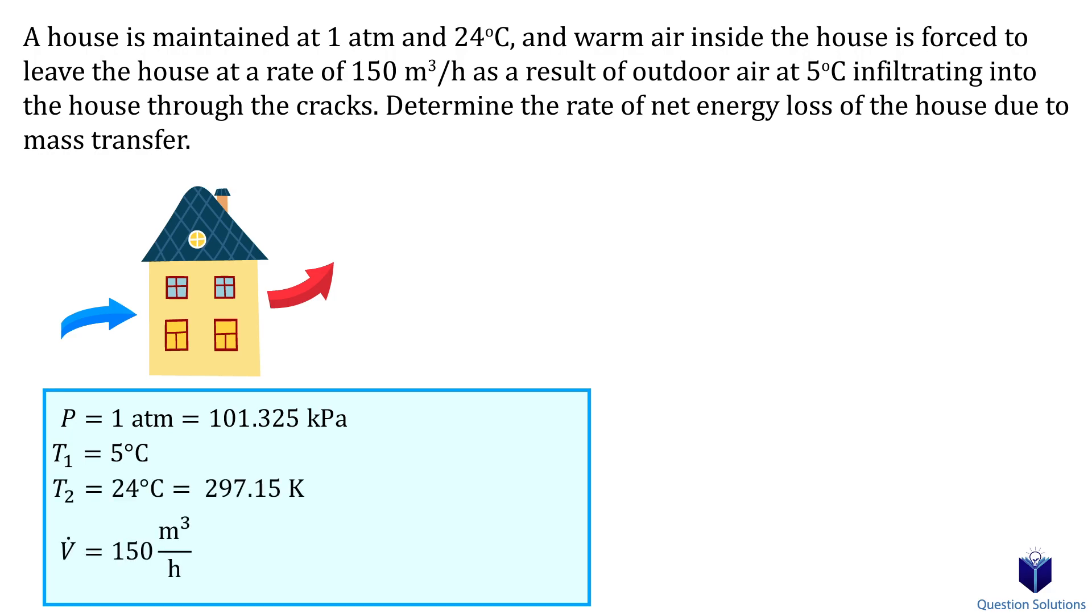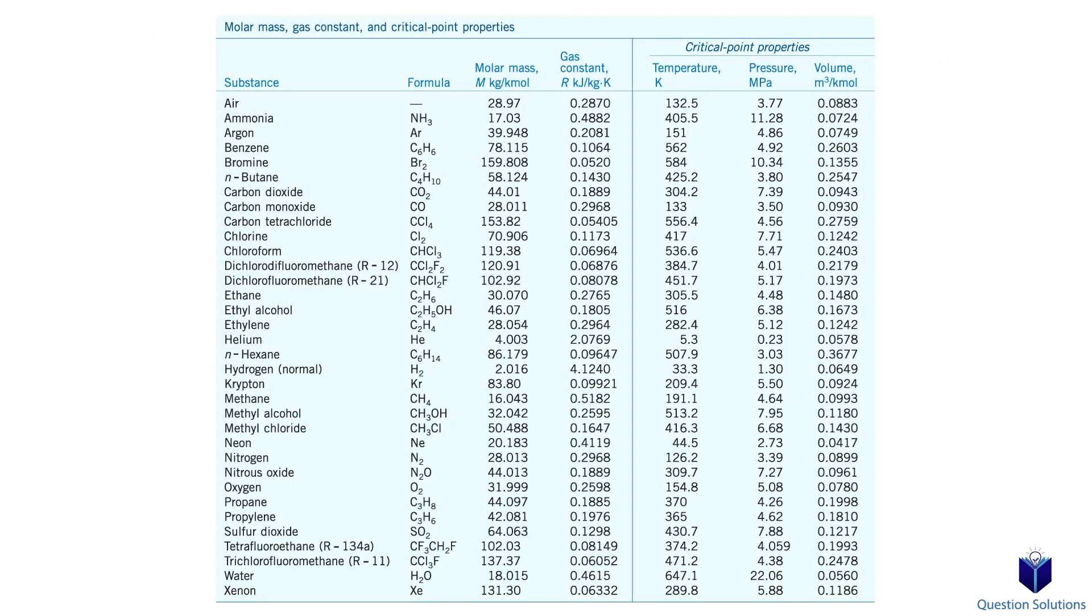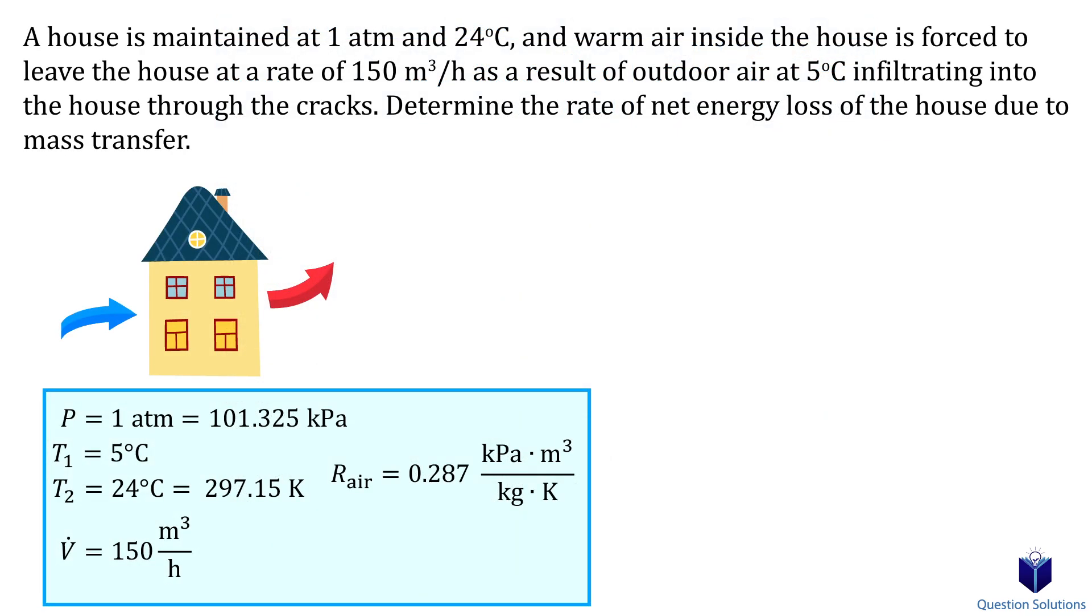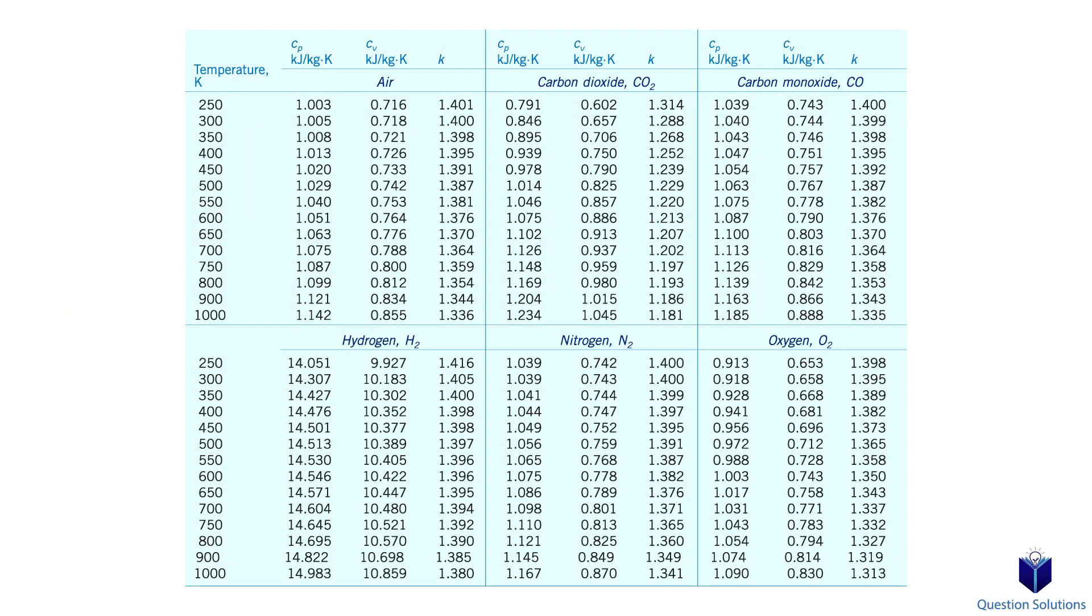The inside air is 24°C, and the rate at which the warm air leaves the house is 150 cubic meters per hour. We will also need the gas constant of air, R = 0.287 kPa·m³/(kg·K), and we need the specific heat of air at 24°C, which is 297.15 K, so cp = 1.005 kg/°C.